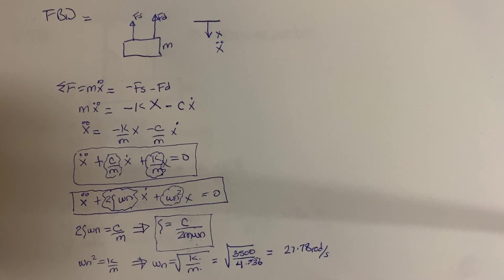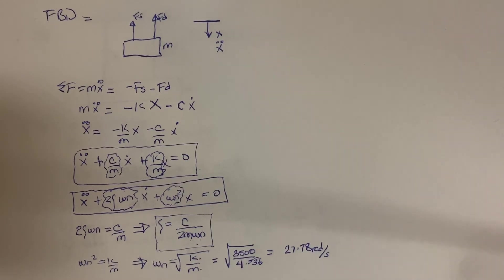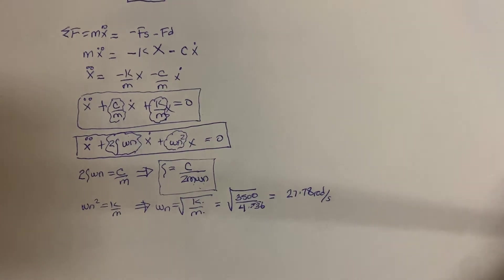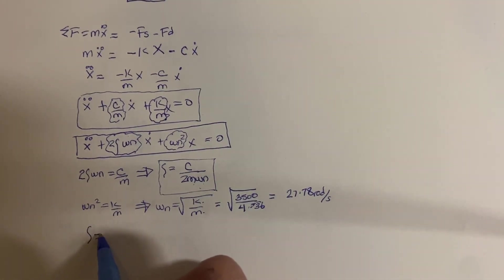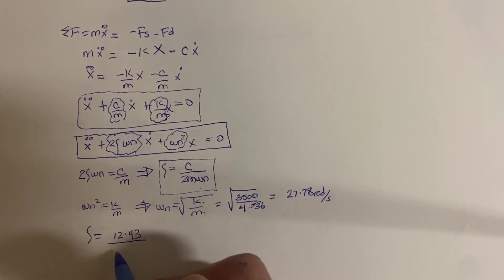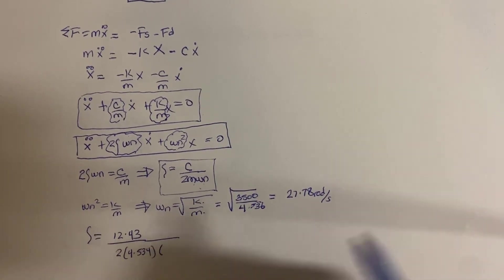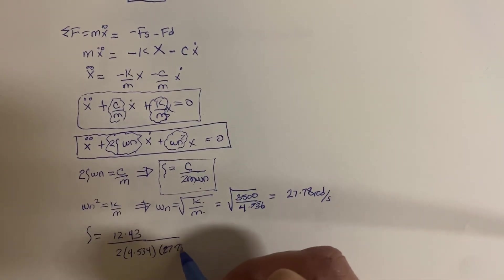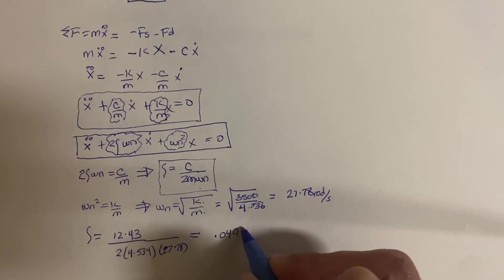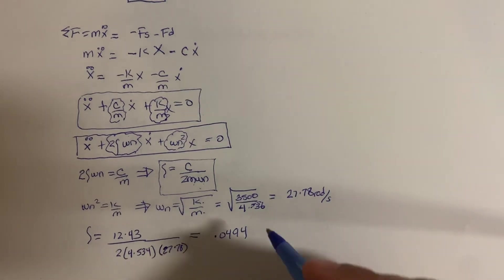Now we have the natural frequency and can find the damping ratio. The damping ratio is equal to the damping coefficient — 12.43 — over 2 times the mass times the natural frequency. That gives us a value of 0.0494. That is part A of the problem.